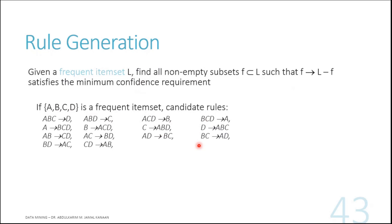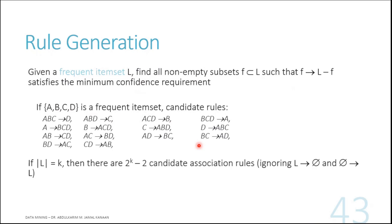This is why brute force can be expensive — just from six items we can generate 602 rules. If L equals k items, then there are 2^k minus 2 candidate association rules. For example, with four items like ABCD: 2^4 = 16, minus 2 equals 14 rules you can generate. We subtract 2 because we ignore the rule that leads to nothing, or where nothing leads to items.